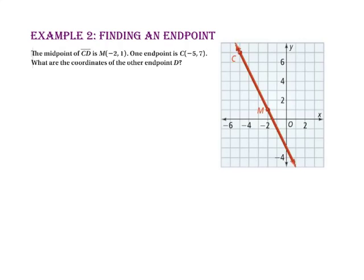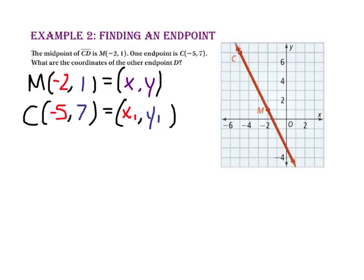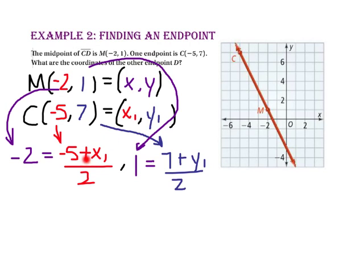In Example 2, the midpoint of segment CD is point M at (negative 2, 1). One endpoint is C at (negative 5, 7). We want to find the coordinates of the other endpoint D. Let M at (negative 2, 1) equal (x, y), and let C at (negative 5, 7) represent (x₁, y₁). Now let's write out the midpoint formula and solve for x₁ and y₁ in both equations.